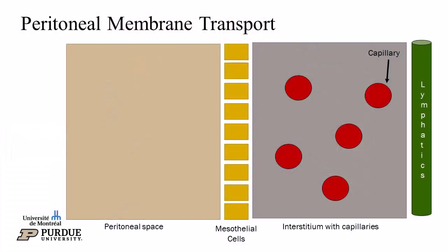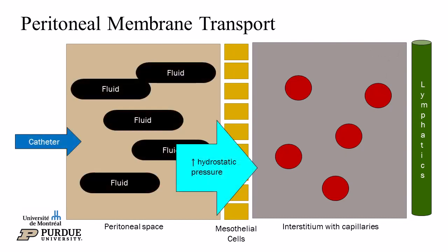When given intraperitoneally, fluid is absorbed across the peritoneal membrane. The peritoneum is lined by mesothelial cells with microvilli surrounding an interstitium filled with capillaries. The peritoneum receives a large proportion of cardiac output — up to 4–7% in humans.